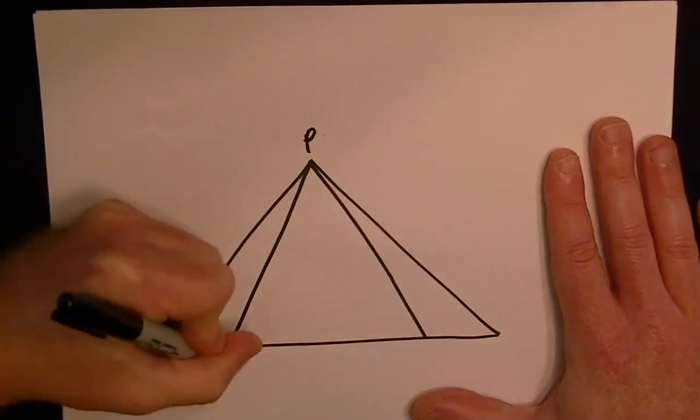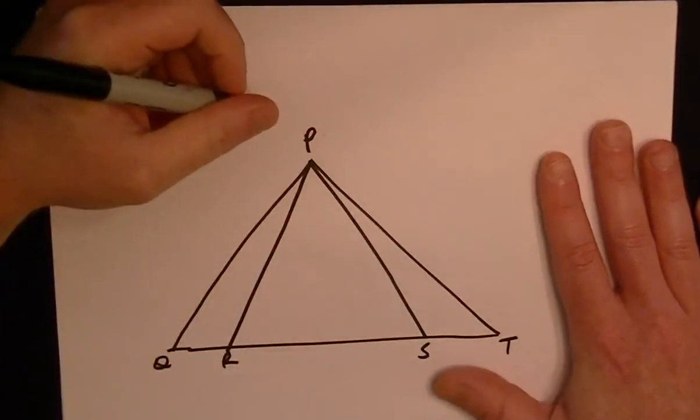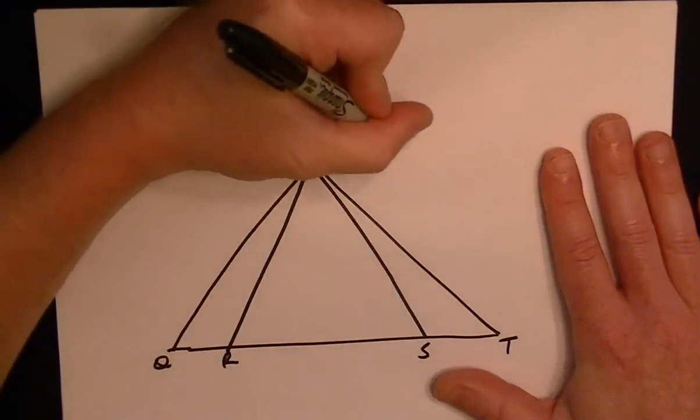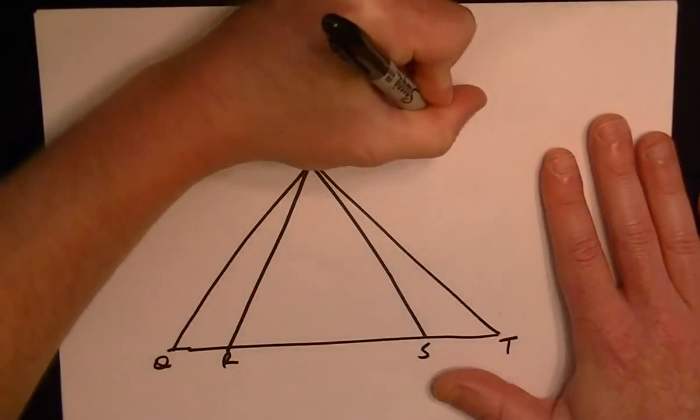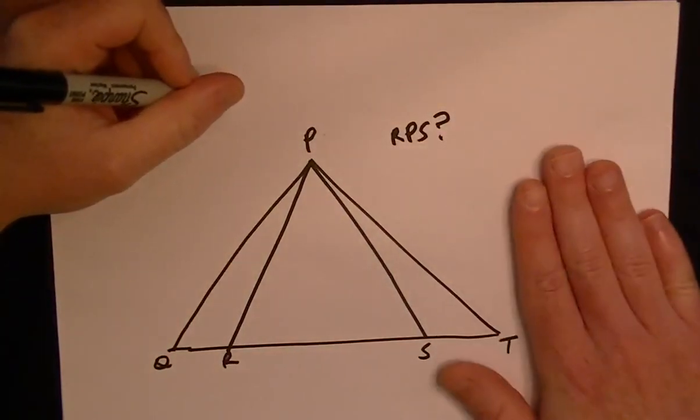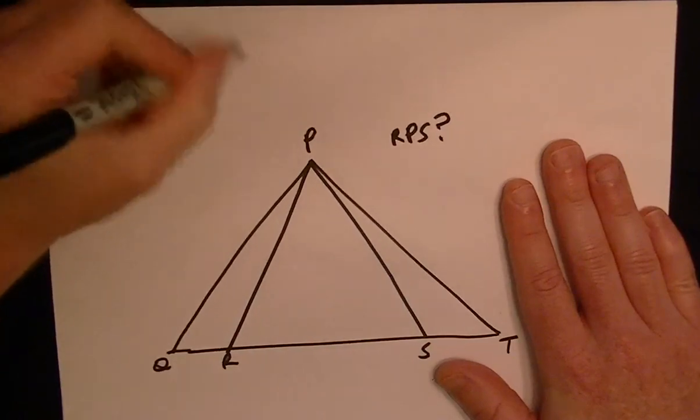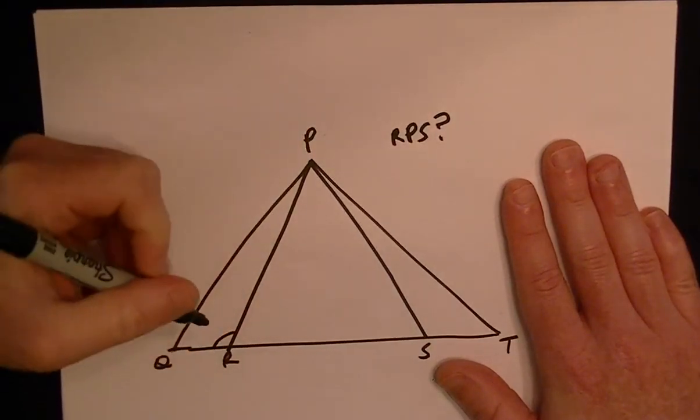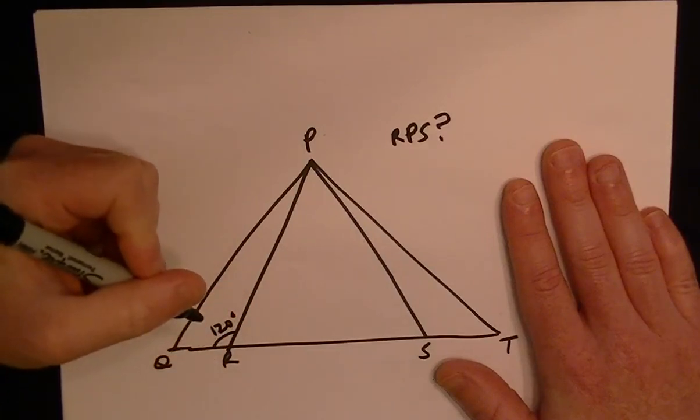So we want to know what the angle RPS is. We're told a few things. We're told that PRQ, so this angle, is equal to 120 degrees.